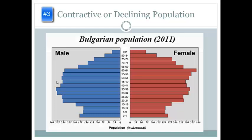The third main type is contractive or declining. These population pyramids have a narrow base, with fewer children being born into the population than was typical before, indicating a decreasing population trend. A low birth rate is indicative of a well-developed country.